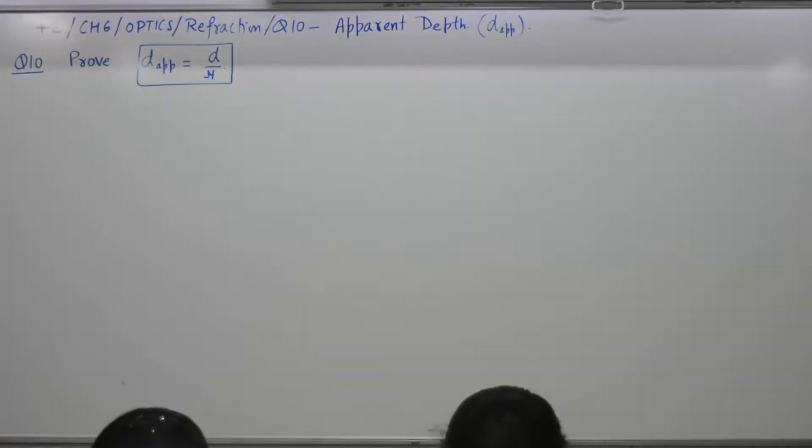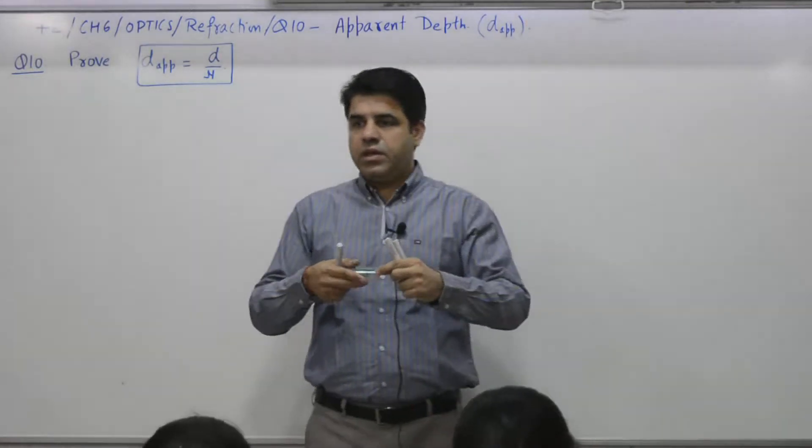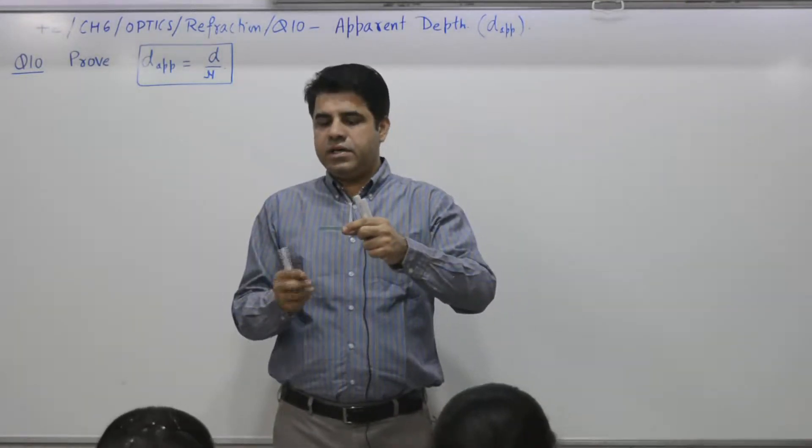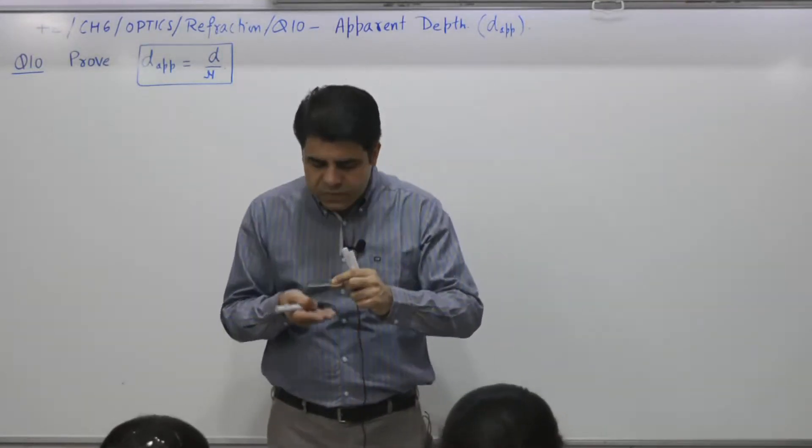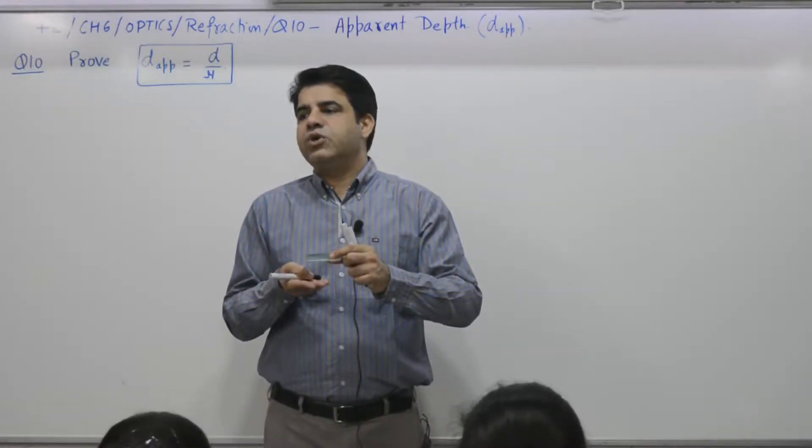Question number 10 deals with apparent depth. In a lake, if there is a coin, if you see it from the top, it appears to be slightly above its actual depth.